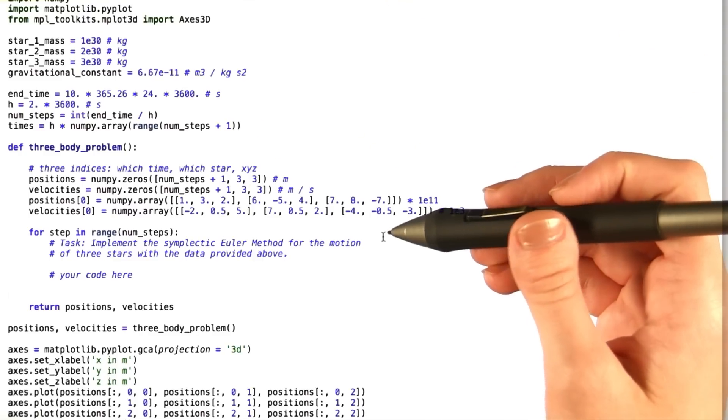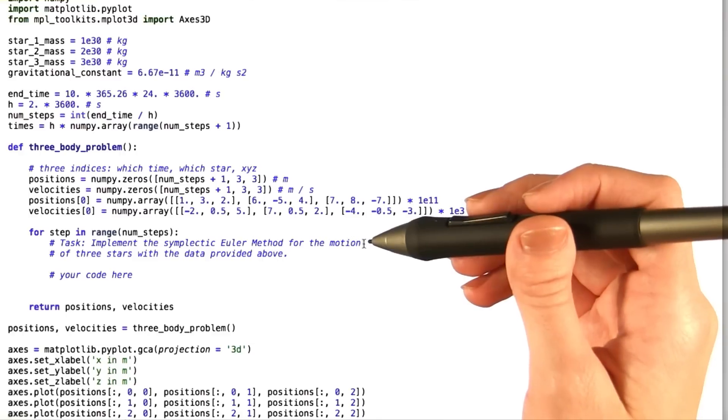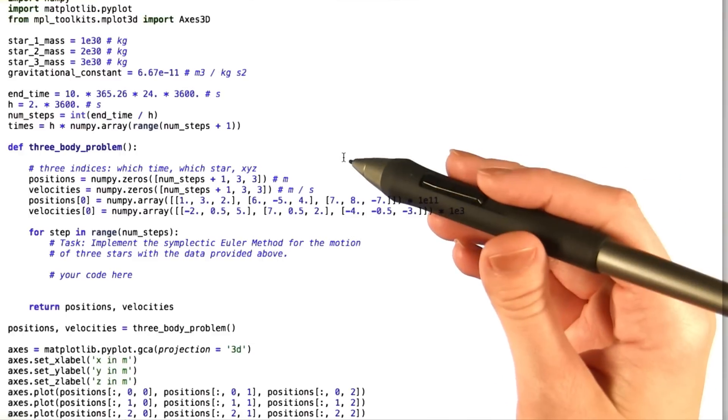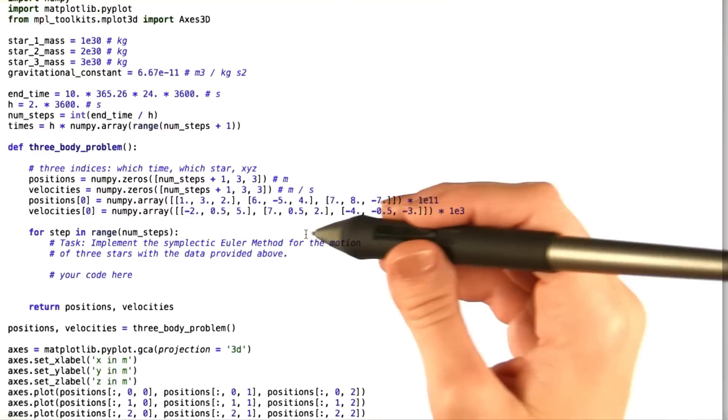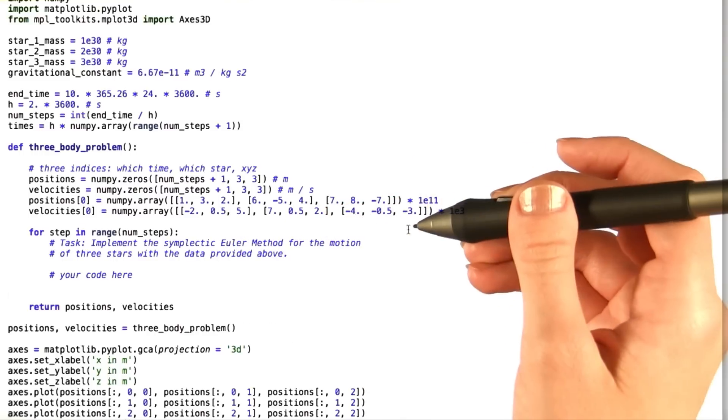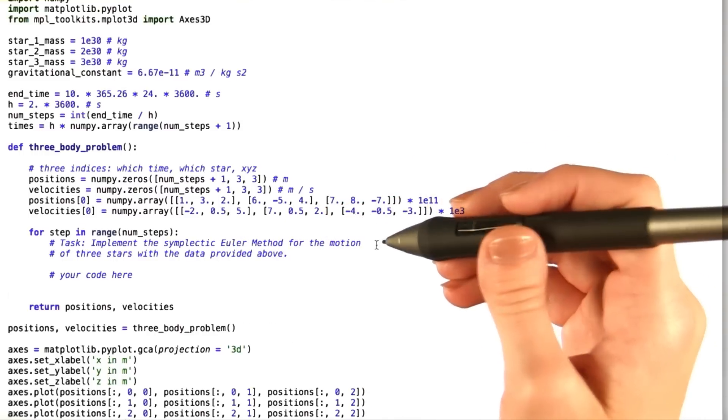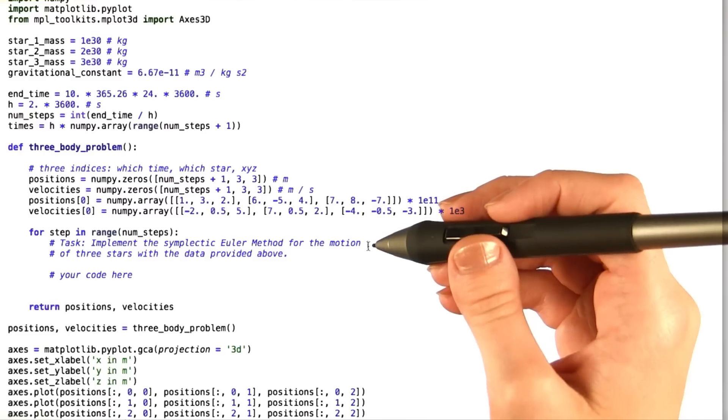And all that's left for you to do is to implement the symplectic Euler method for the motion of the stars with the data provided above. Remember, the symplectic Euler method is kind of half implicit, half explicit method. It will help you find the position and velocity of each star.